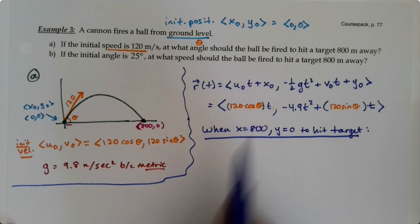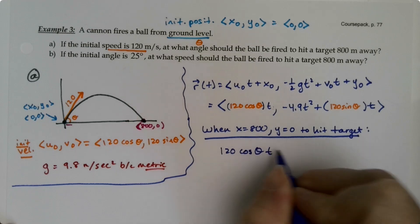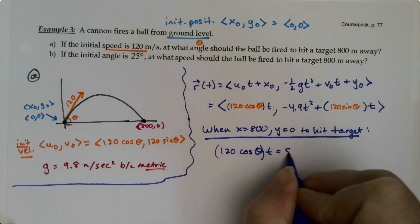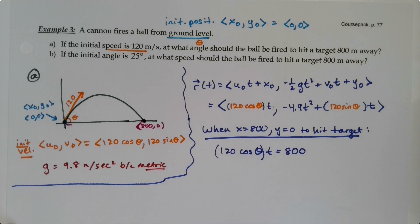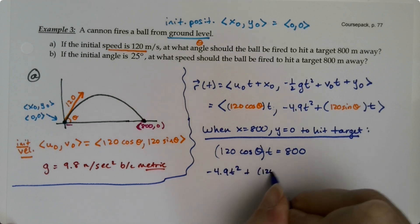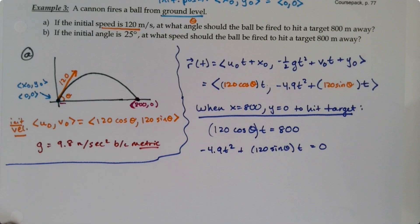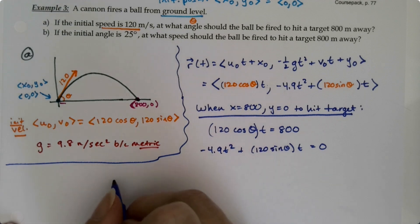So x is 800. So that means that 120 cosine of theta t must be equal to 800. And similarly, negative 4.9 t squared plus 120 sine of theta t would be equal to 0. That's two equations and two unknowns. We don't know theta and we don't know t. So we can solve this. Now by hand, you would solve this for say t, and then substitute it into the other equation. But we have something called maple. So we're going to use solve.